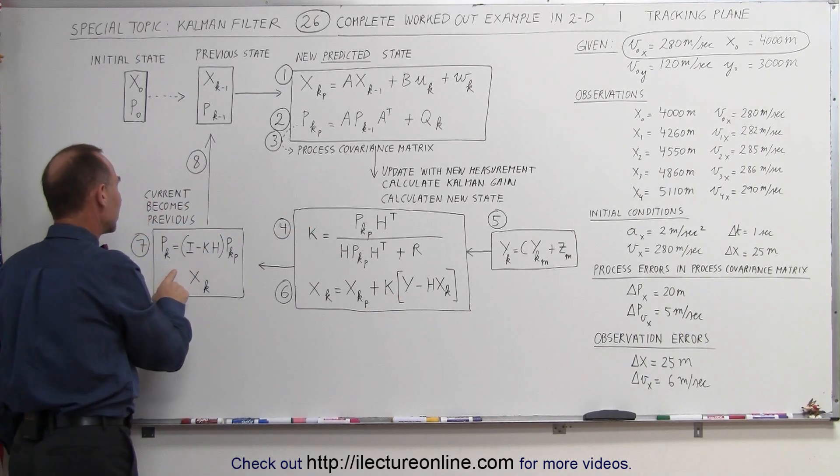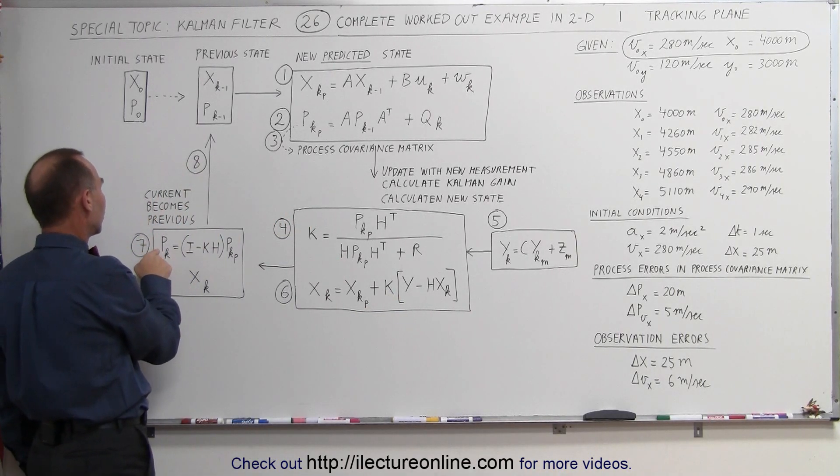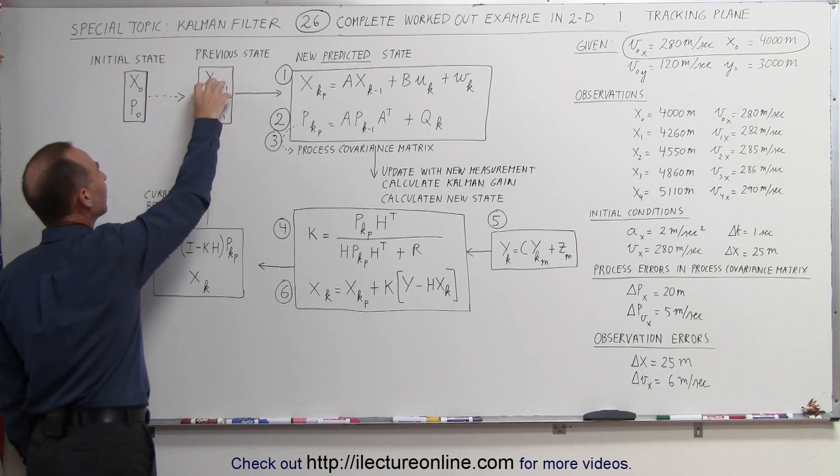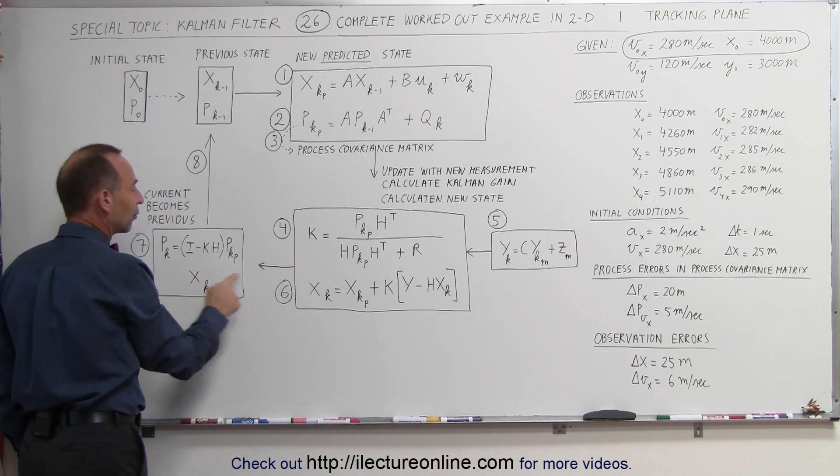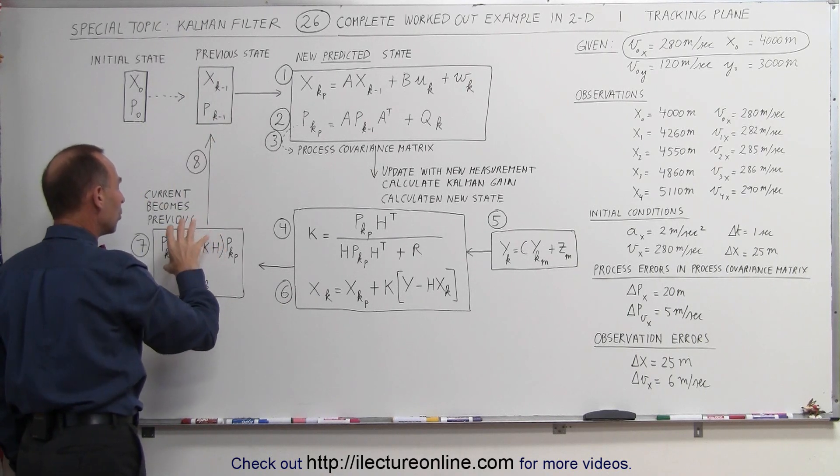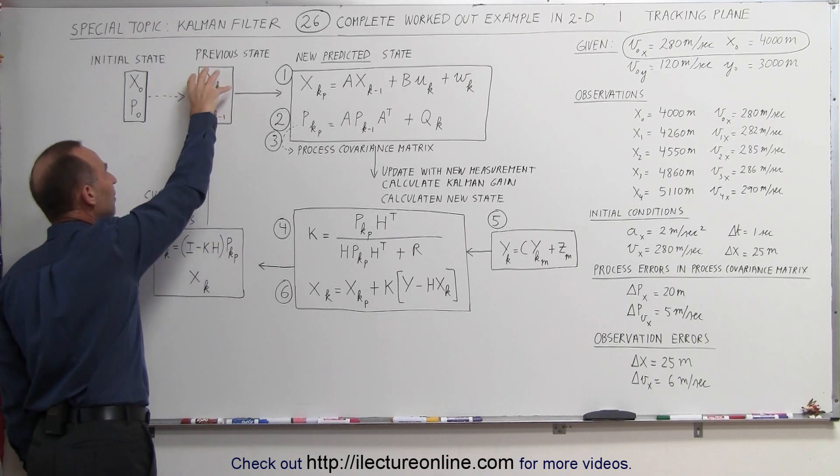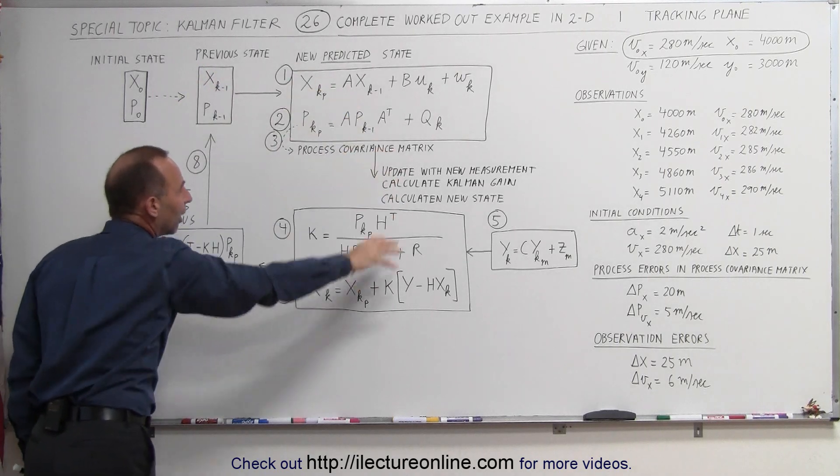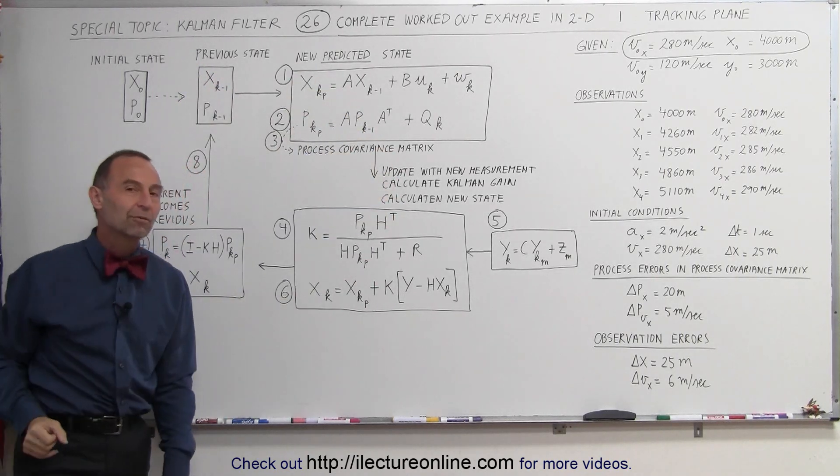After we've done that, we come back over here. We're going to update the covariance matrix to then be ready for the next go around, and then of course the X sub K right here is just going to be fed back. Whatever was the most current condition will then become the previous condition or the previous state of the next iteration of the Kalman filter.